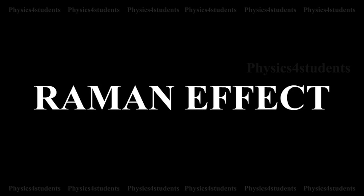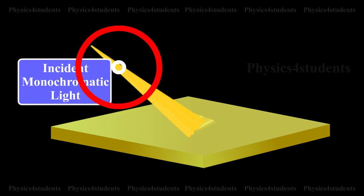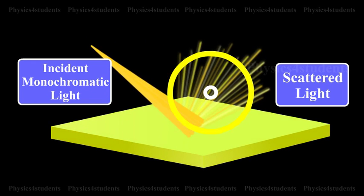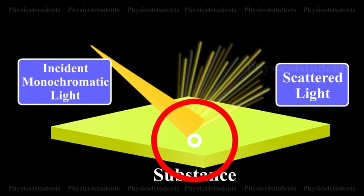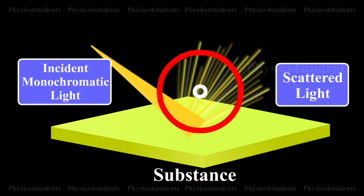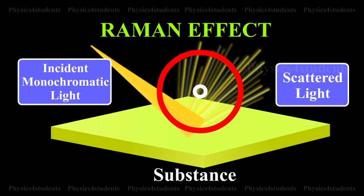Raman Effect. In 1928, Sir C. V. Raman discovered experimentally that the monochromatic light is scattered when it is allowed to pass through a substance. The scattered light contains some additional frequencies other than that of incident frequency. This is known as Raman Effect.